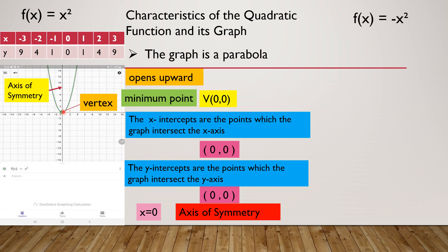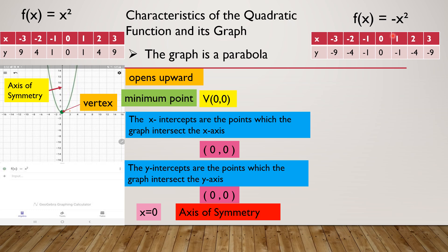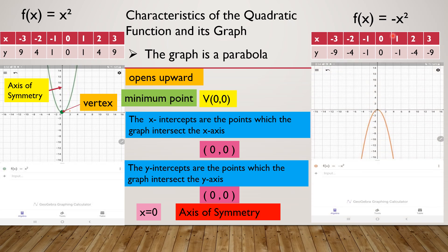Now I have f(x) = -x². The difference is that here a is positive 1, while here a is negative. So what would the graph look like? The parabola opens downward. So if a is negative, the graph opens downward.